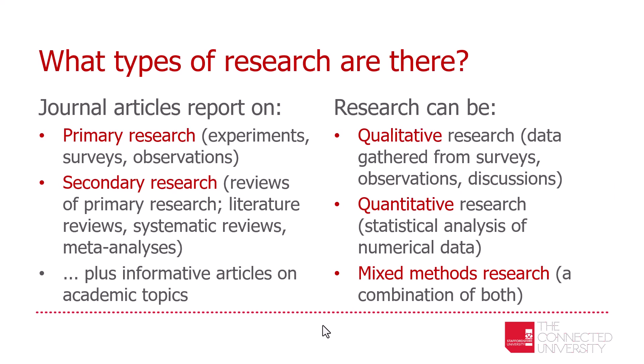Let's think about the kinds of research you might find within these journal articles. They report on a range of research types. There might be primary research, where the researchers have carried out experiments, conducted surveys, made observations, or done interviews to gather data themselves. Or it might be secondary research, where researchers have reviewed primary research that already exists — these might be literature reviews, systematic reviews, or meta-analyses, reviewing existing research data to bring it together and come to conclusions.